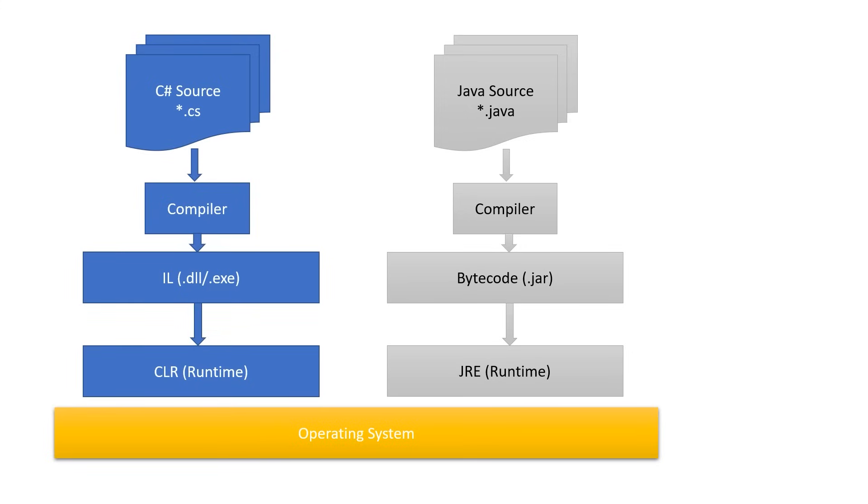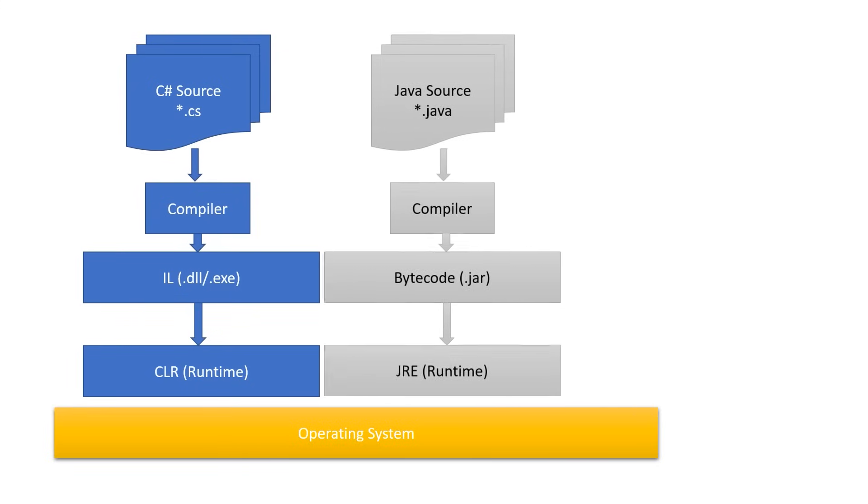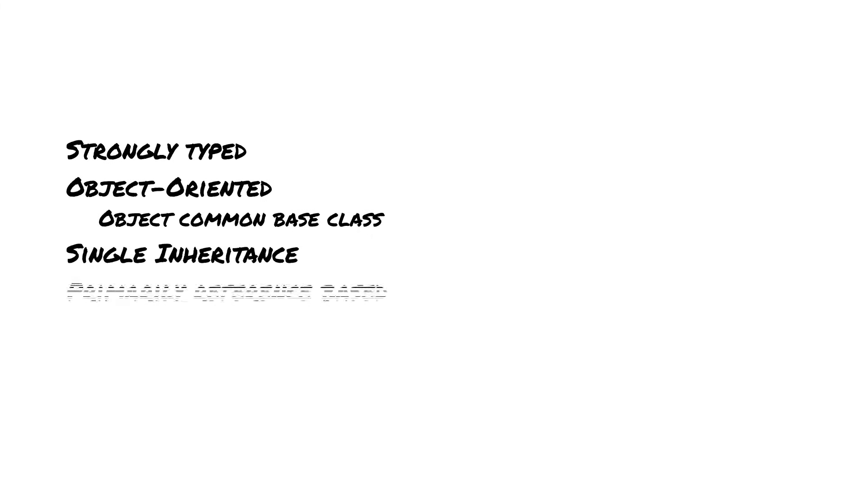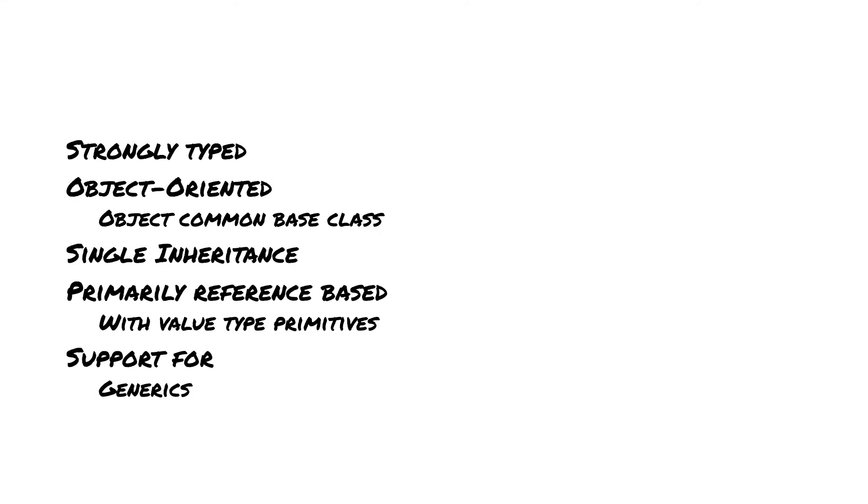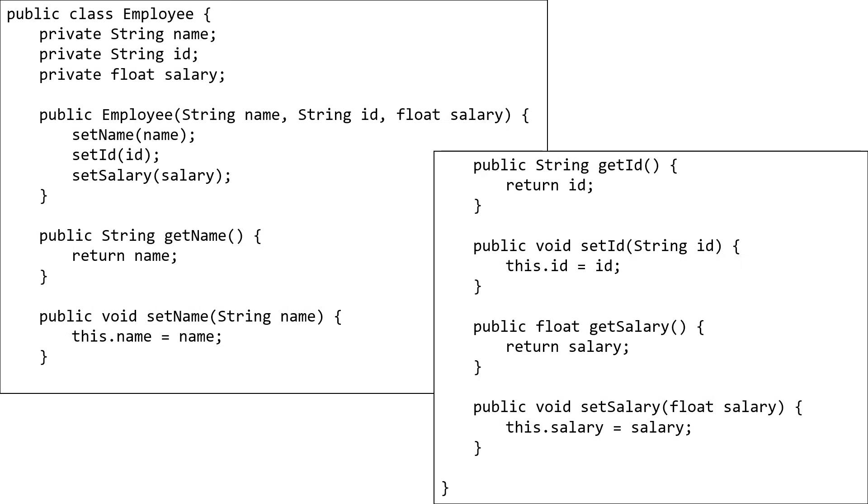Now let's start with what they have in common. They both compile to an intermediate code and execute within a runtime. They both have run-anywhere capability. They're both strongly typed. They're both object-oriented languages with a single base class called object, and they're limited to single inheritance. Both have value-type primitives and are primarily reference-based for the rest of your variables. They both support generics, functional programming, and include lots of metadata in the binaries to support dynamic applications. In fact, this class will compile in either language.